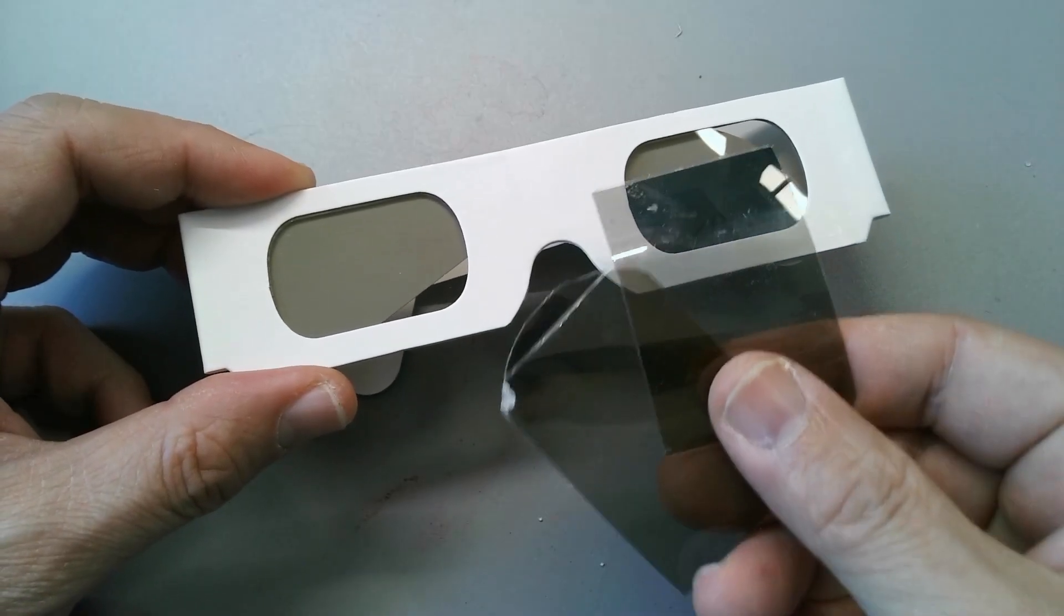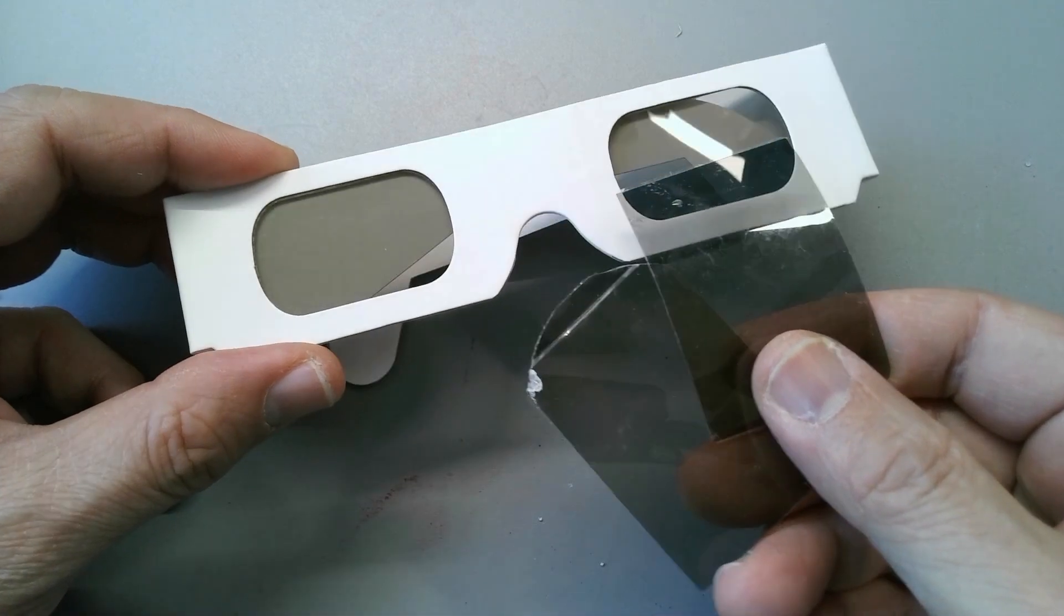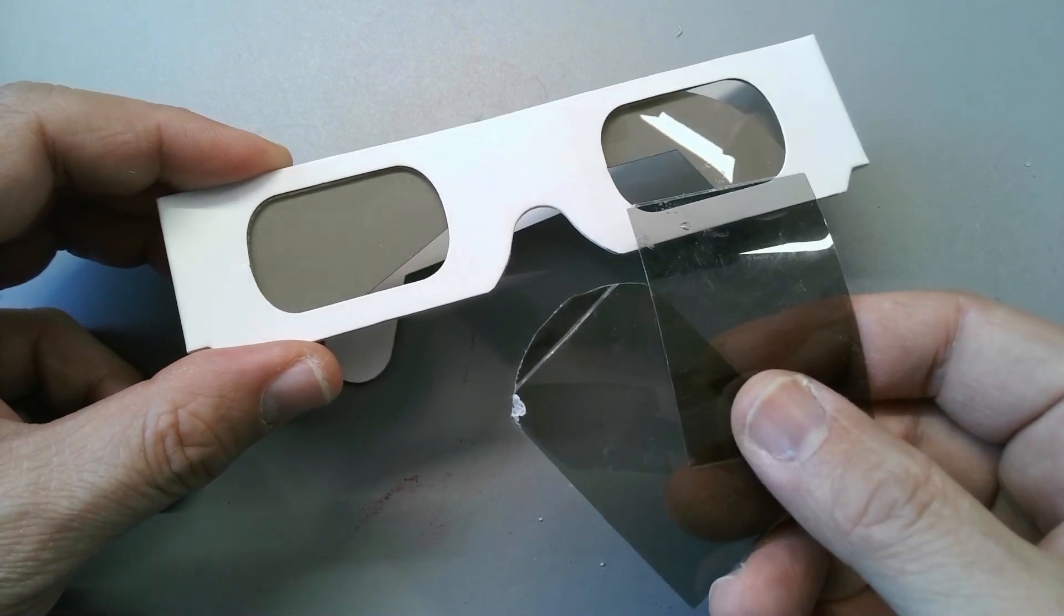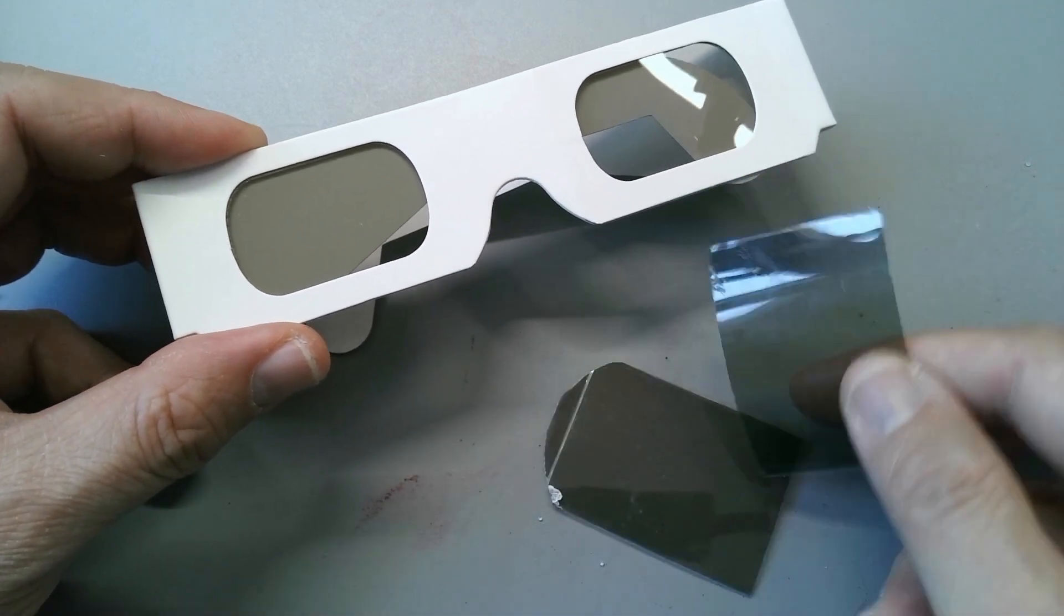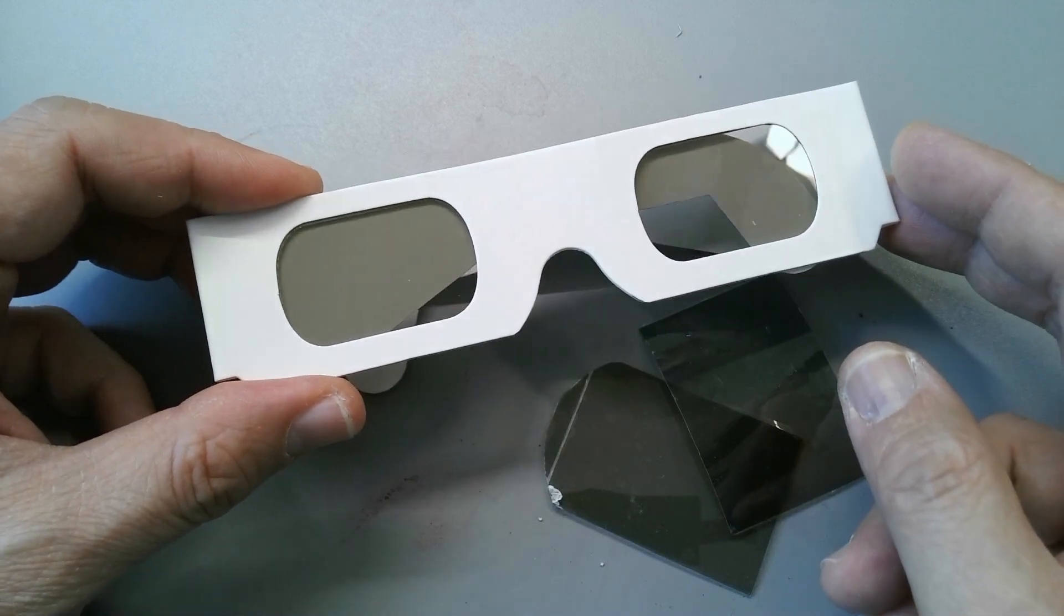Another possibility is that you use so-called 3D glasses because they also have filters in there. And that's a little trick here: some of those 3D glasses actually use so-called circular polarizing filters and they allow you a little bit more variation using the color play, so you might also want to experiment with those.